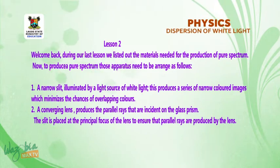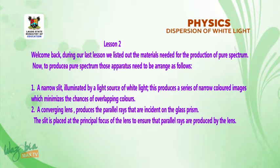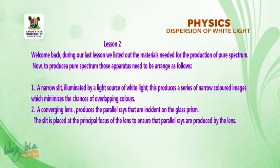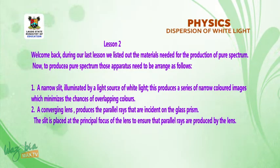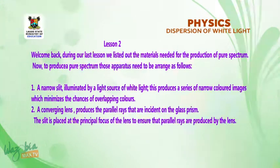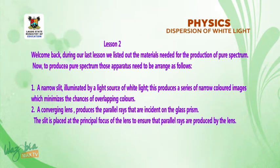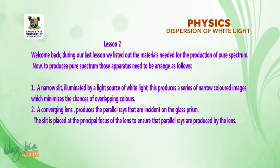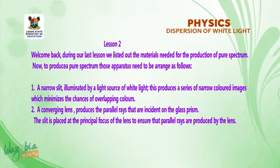Welcome back. During our last lesson, we listed out the materials needed for the production of pure spectrum. Now, to produce a pure spectrum, those apparatus need to be arranged as follows. One, a narrow slit illuminated by a bright source of white light — this produces a series of narrow colored images, which minimizes the chances of overlapping colors. Two, a converging lens produces the parallel rays that are incident on the glass prism. The slit is placed at the principal focus of the lens to ensure that parallel rays are produced by the lens.